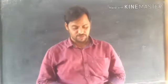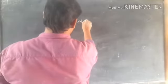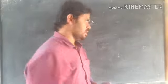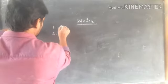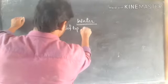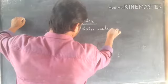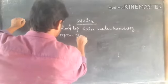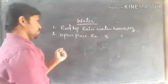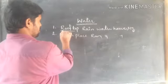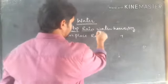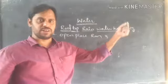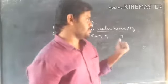Hi children, welcome back to the lesson on water. We are discussing the lesson water, and so far we discussed how to conserve rainwater. We can conserve rainwater in two processes: number one, rooftop rainwater harvesting, and number two, open place rainwater harvesting structure. In the previous class we discussed rooftop rainwater harvesting by constructing the percolation pit or underground tanks to store water and improve the ground level water.